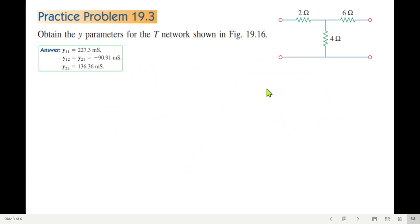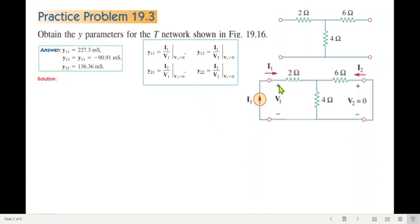Now let's come to the problem: obtain the y parameters for the T network shown in the figure. This is a T network and we have to find all four parameters. The answer is also given in the book; we'll try to match that. We'll find the left two first, so our circuit will be like this: connecting the current source on the left-hand side and short-circuiting the right-hand side.